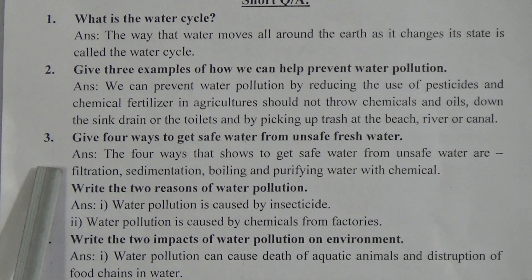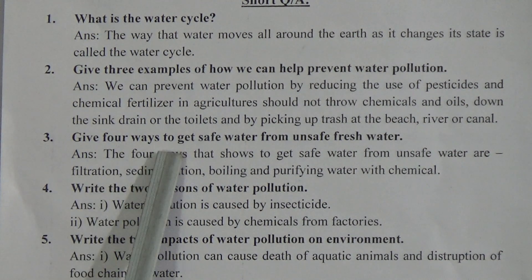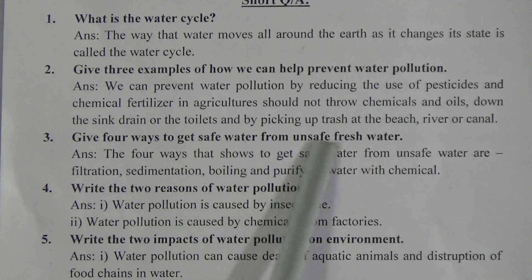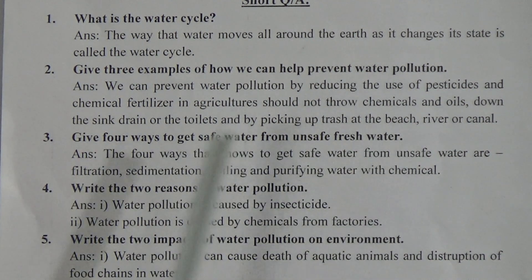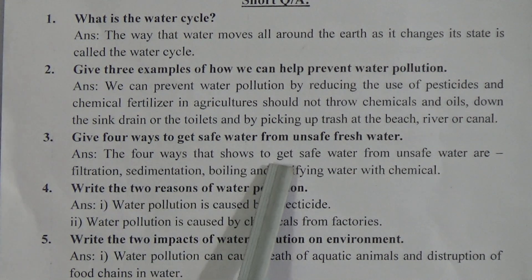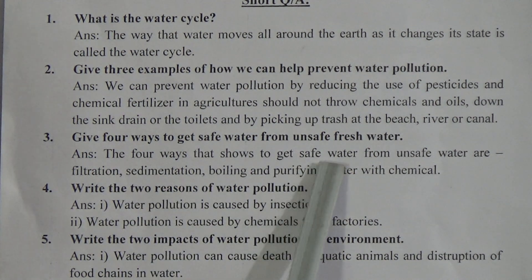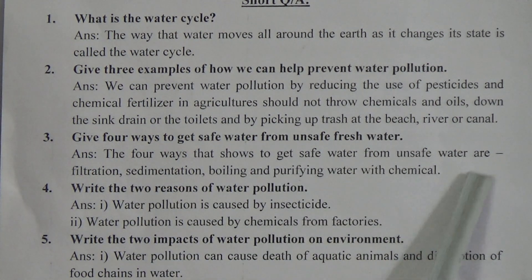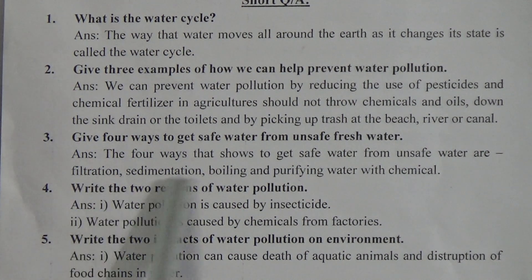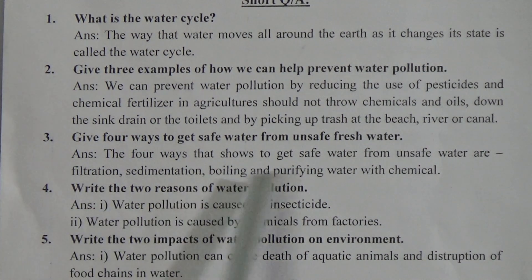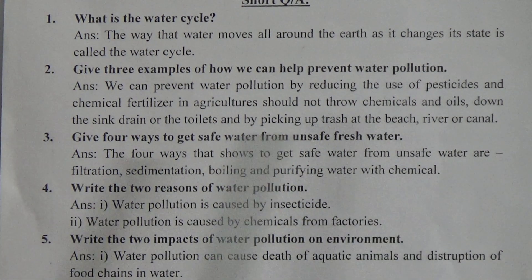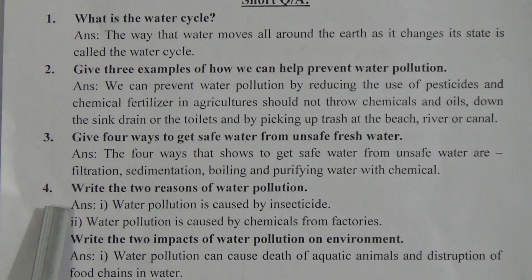Short question number 3: Give 4 ways to get safe water from unsafe fresh water. The 4 ways to get safe water from unsafe water are filtration, sedimentation, boiling, and purifying water with chemical.